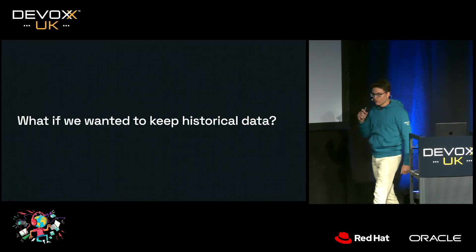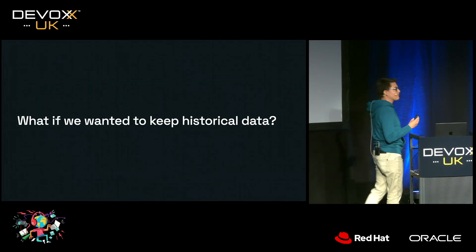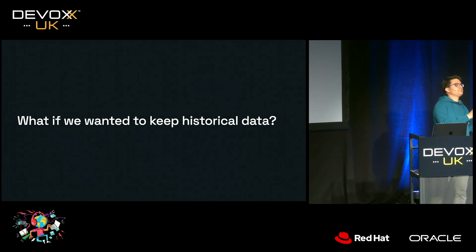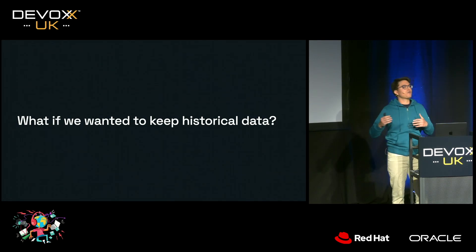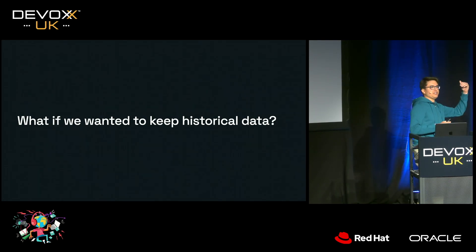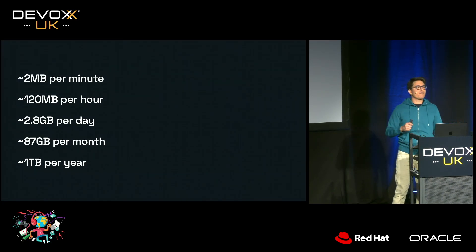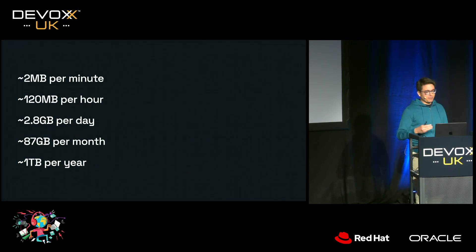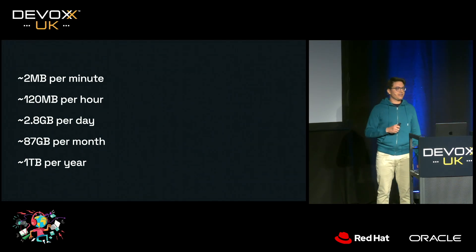However, I didn't want to store only one minute of data — I wanted to store historical data as well. I wanted to keep track of all this data per minute, for a day, for a month, so I could do further analysis or even detect spikes in usage. That would translate to 2 megabytes per minute, or approximately 120 megabytes per hour, and you can get to 1 terabyte per year using sorted sets or deterministic data structures.